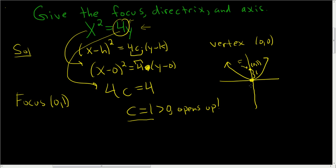The directrix is the absolute value of c units down. I keep saying absolute value because if c is negative, you want to treat it as a positive since you're talking about distance. So this here would be the directrix — that's a horizontal line at negative 1, so the directrix is y equals negative 1.